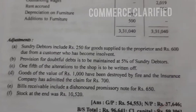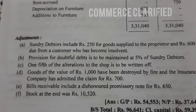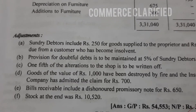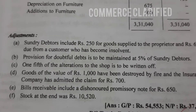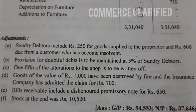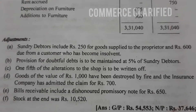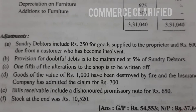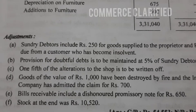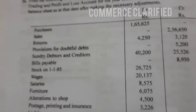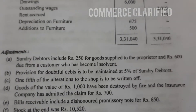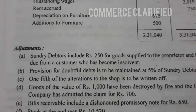Next, rupees 600 due from a customer who has become insolvent. Those 600 rupees are considered as irrecoverable debts, that is bad debts. The trial balance already has old bad debts of 525, so this 600 is treated as new bad debts, which are added to bad debts and deducted from sundry debtors.